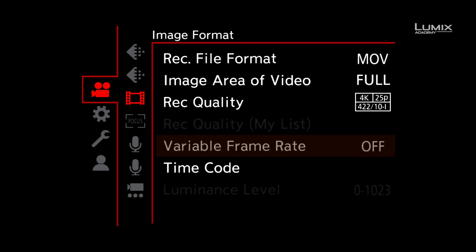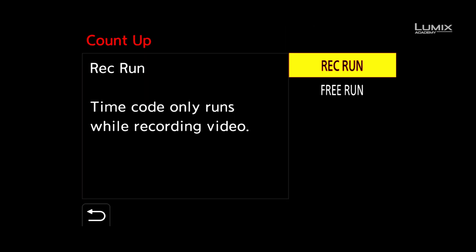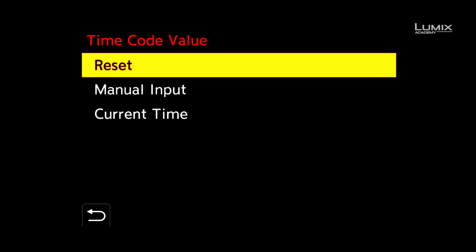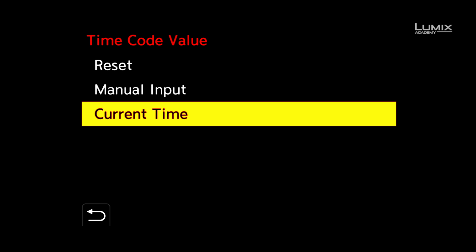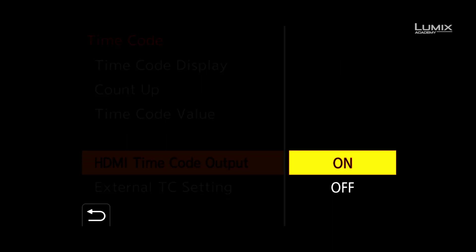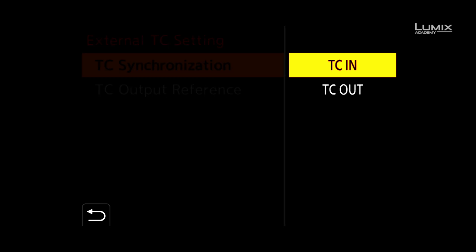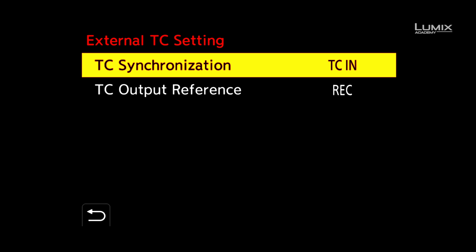The first option allows you to display the timecode on the monitor. The second option gives you the choice of free run or rec run — for this tutorial we're going to stick with free run. Timecode value allows you to input a custom timecode value if you're using the camera as the master timecode device. HDMI timecode output allows you to pass timecode to external recorders via HDMI. Lastly, the external timecode settings option allows you to choose either timecode in, if you're using an external device like the Tentacle Sync, or alternatively timecode out if you're using the camera as the master timecode device.